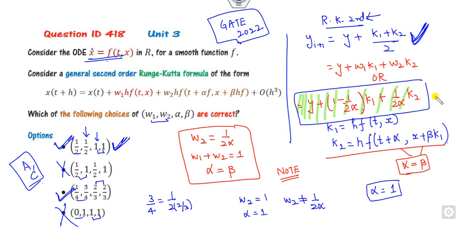We're using the same concept again. Whenever you use Runge-Kutta second order, there must be a condition that alpha and beta must be the same. H·F is nothing but K1. W2 is 1/(2α), W1 is 1 - 1/(2α). H·F is K1. Think about these options and you get the right answer within 15 seconds.